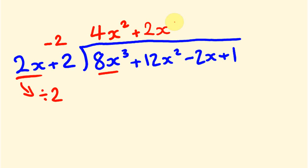Let's get the next part of our answer. Minus 2 times 2x is minus 4x. Minus 4x minus 2x is minus 6x, and we divide by 2 to get minus 3. Now let's check for a remainder: minus 2 times minus 3 is 6, and 6 plus 1 is 7. You don't need to divide the coefficient into the remainder. So our remainder is 7. That's how we get the answer.